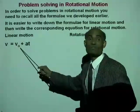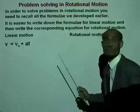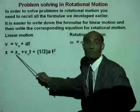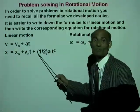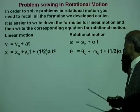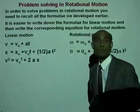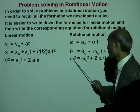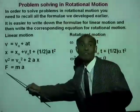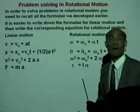For linear motion, V = V₀ + AT is our first equation of motion. For rotational motion: ω = ω₀ + αT. The equation X = X₀ + V₀T + ½AT² becomes θ = θ₀ + ω₀T + ½αT². V² = V₀² + 2AX becomes ω² = ω₀² + 2αθ. F = MA becomes τ = Iα for rotation.